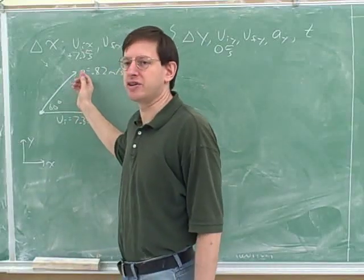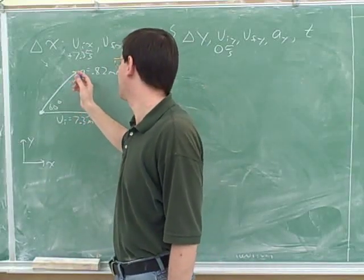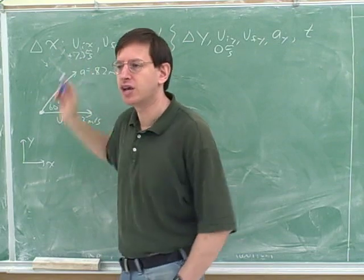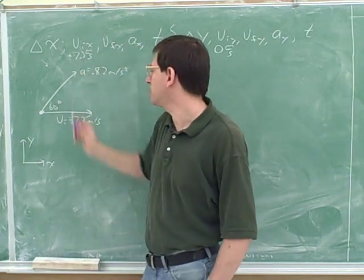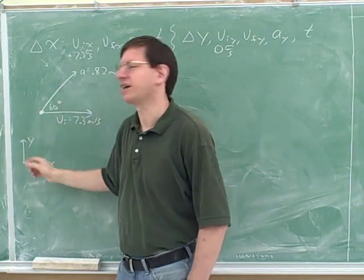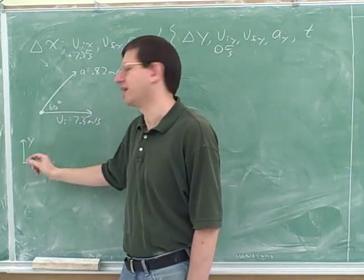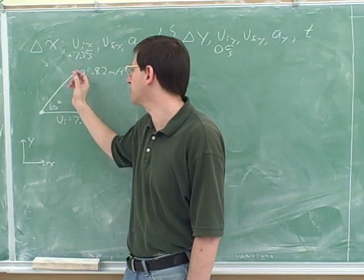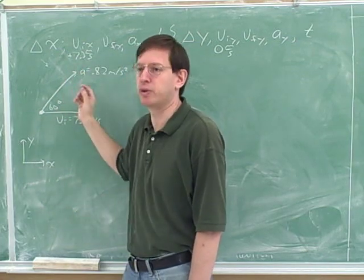But this acceleration is not nearly so simple. We actually have to break this into components. How do we know that we have to break this into components? Because this vector is neither parallel nor anti-parallel to either axis, whereas this is parallel to the x-axis. If you're neither parallel nor anti-parallel to an axis, you've got to be broken into components.